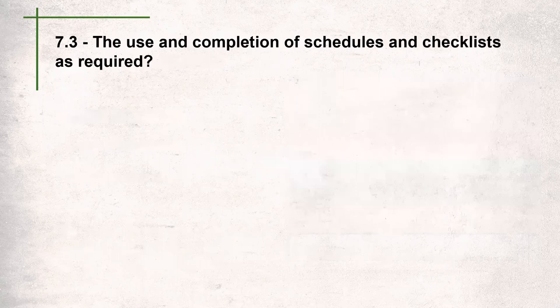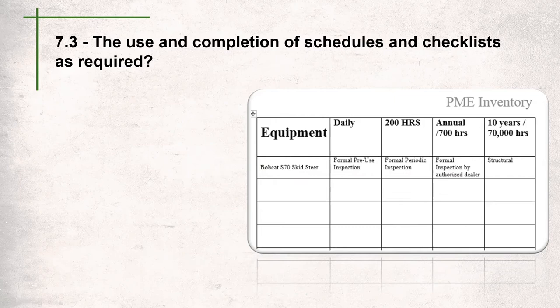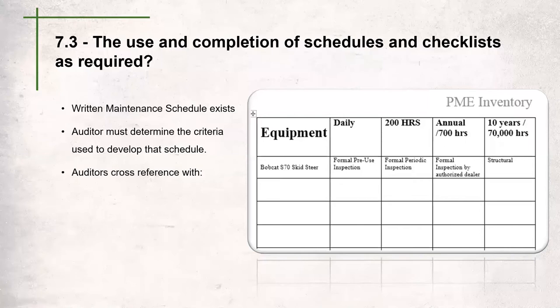Question 7.3 covers the use and completion of schedules and checklists as required. The auditor will look for maintenance schedules for specific types of equipment. In this example, there's a schedule for a bobcat with daily, every 200 hours, every 700 hours, and every 70,000 hours intervals. We're not asking for anything difficult — just a basic schedule. The auditor will look at that schedule and make sure the criteria used to develop it came from either the manual or from legislation.